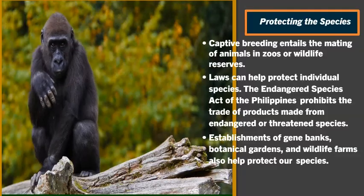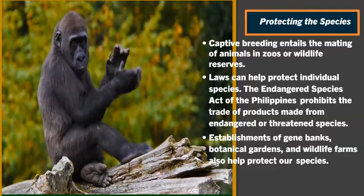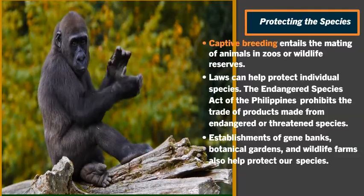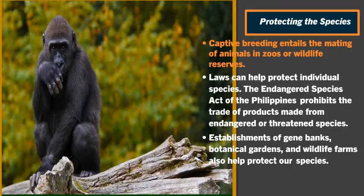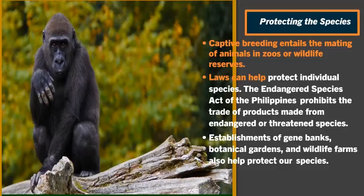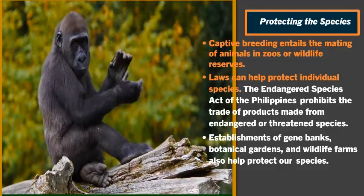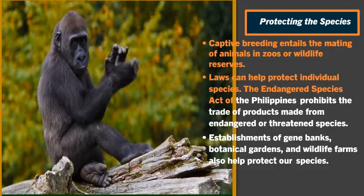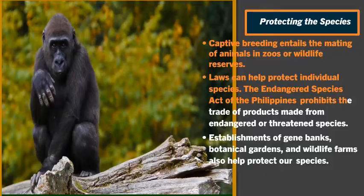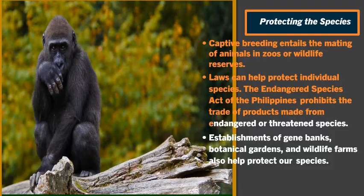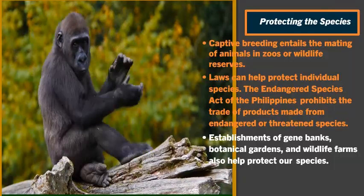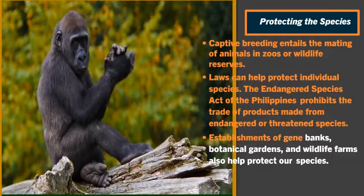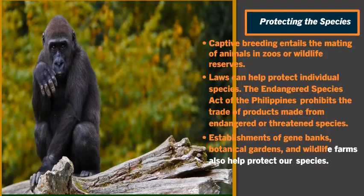Protecting the species: captive breeding entails the mating of animals in zoos or wildlife reserves. Laws can help protect individual species — the Endangered Species Act of the Philippines prohibits the trade of products made from endangered or threatened species. Establishment of gene banks, botanical gardens, and wildlife farms also help protect our species.